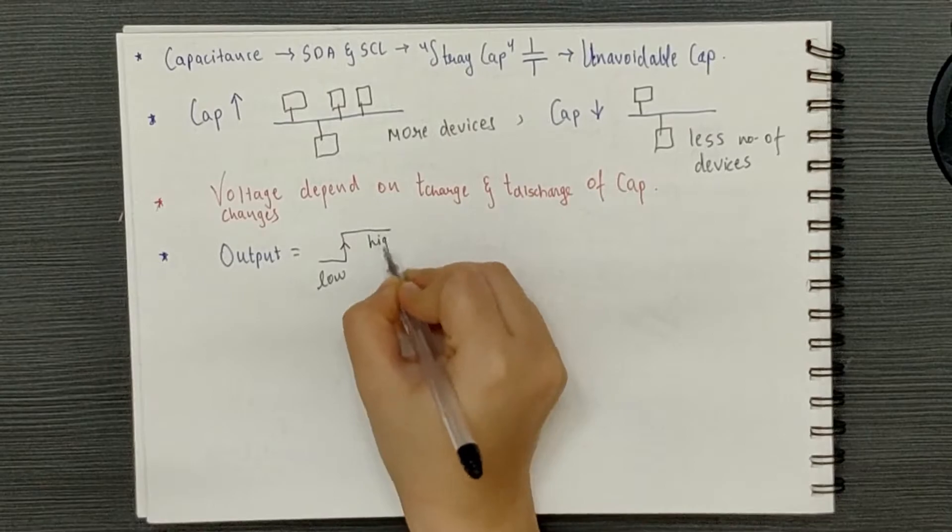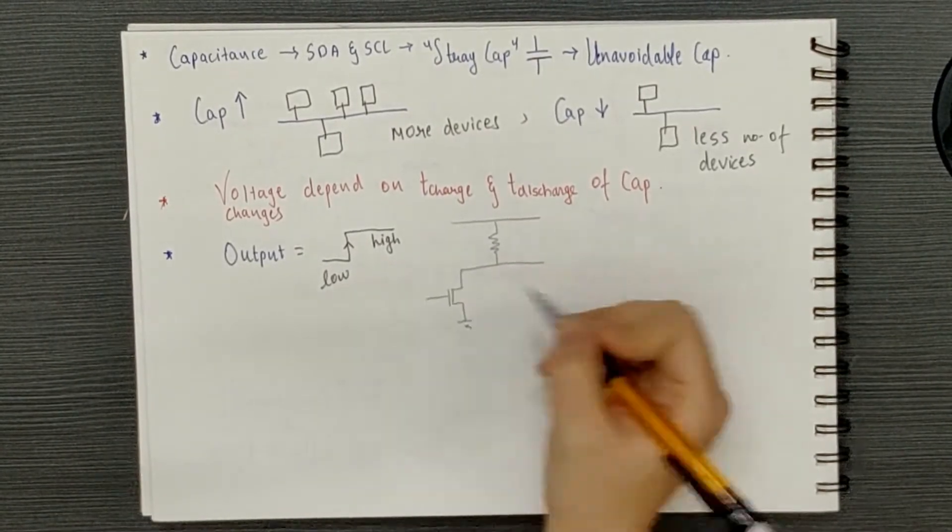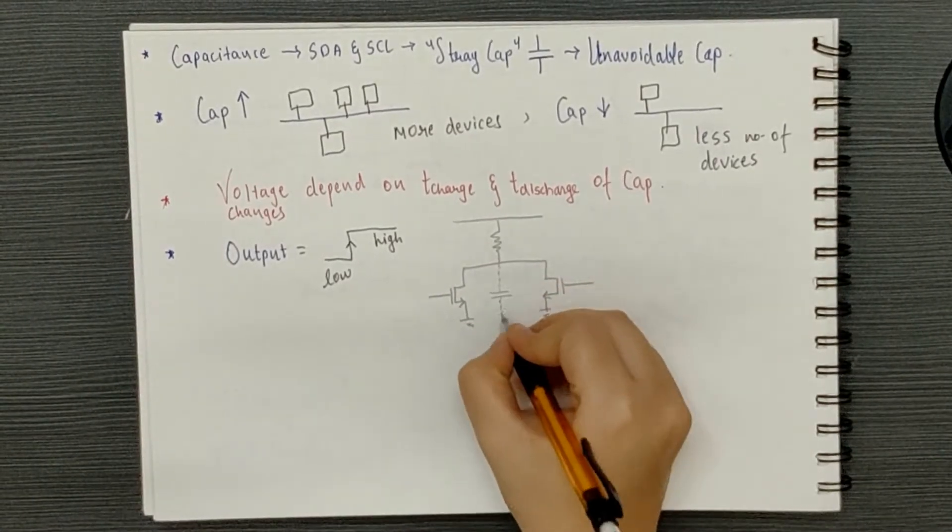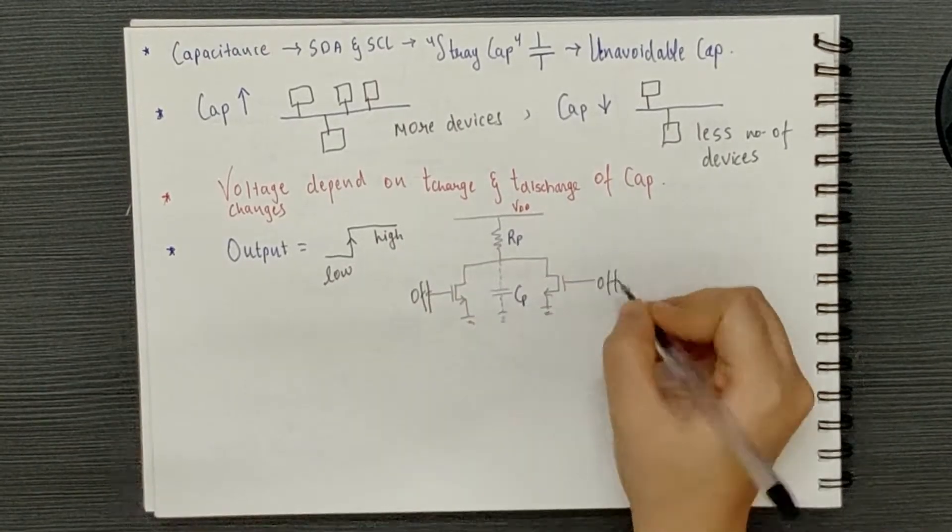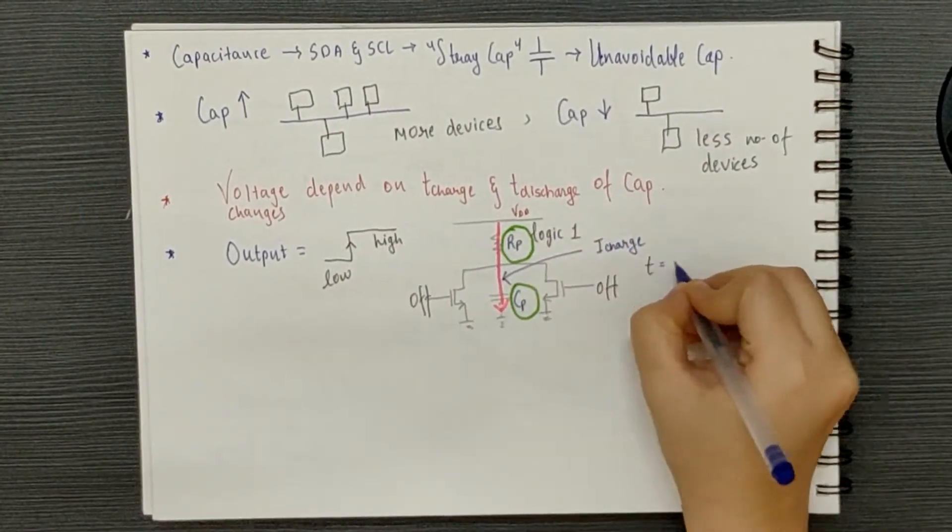When the output transitions from low to high state, at that time the capacitance gets charged and the value of the pull-up resistor decides the charging time. The discharge time, on the other hand, depends on the low impedance of NMOS transistor.